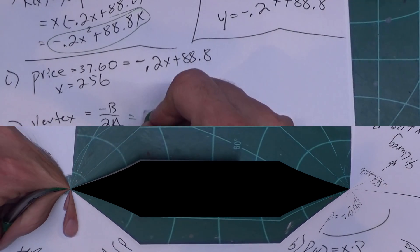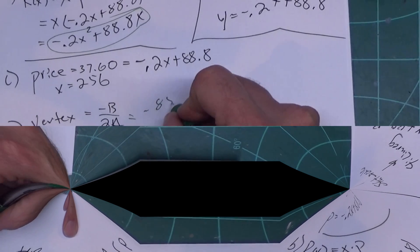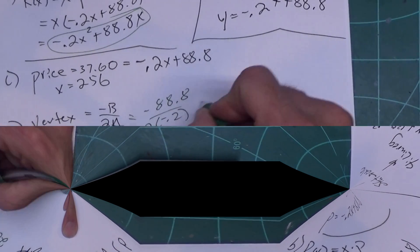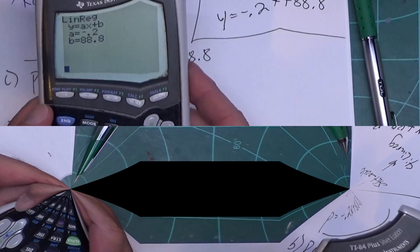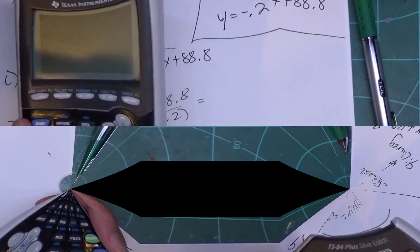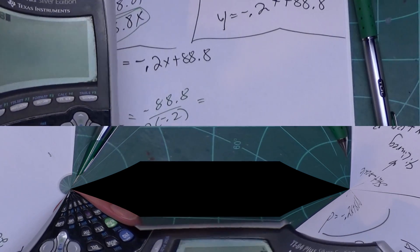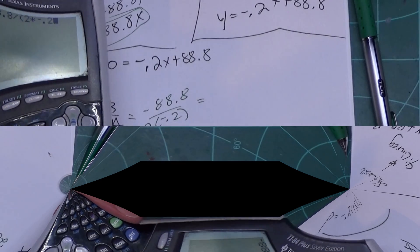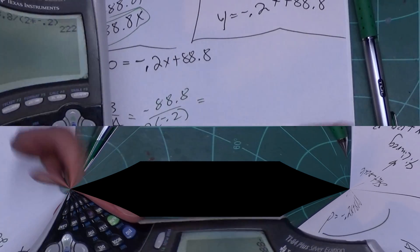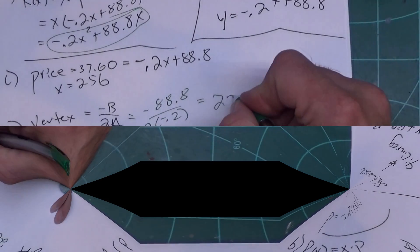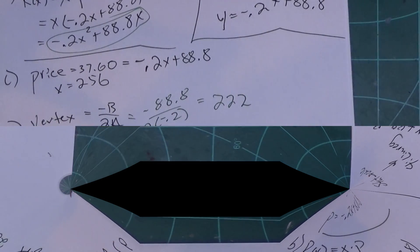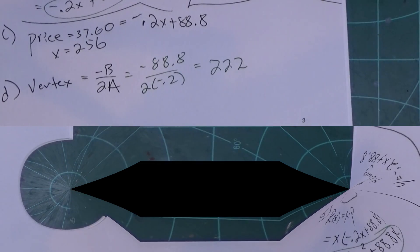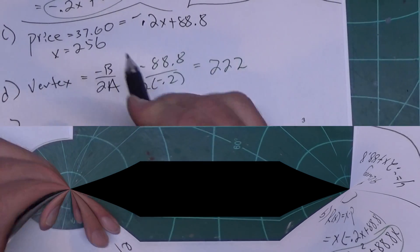Now we're working off revenue, so I have to work off these right here. So this is negative 88.8 over 2 times negative 0.2. And typing that in the calculator, go on to the home screen, I type in negative 88.8 divided by parentheses 2 times negative 0.2, and I get 222. So I have to sell 222 items to maximize my revenue.